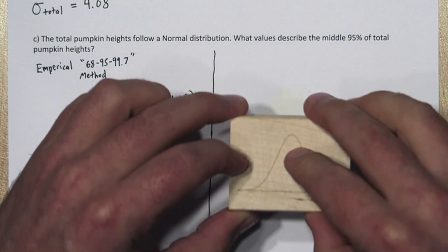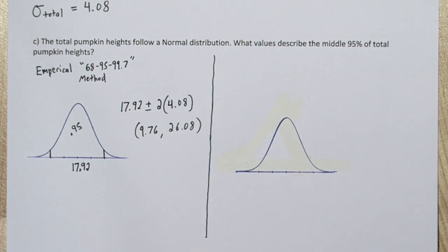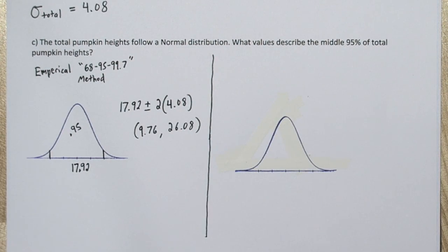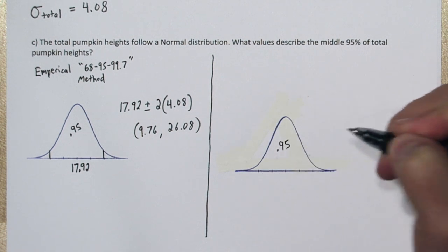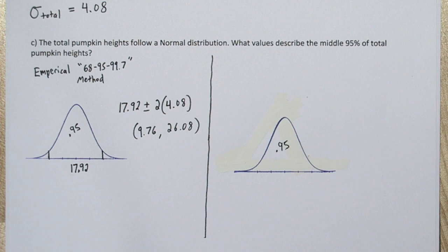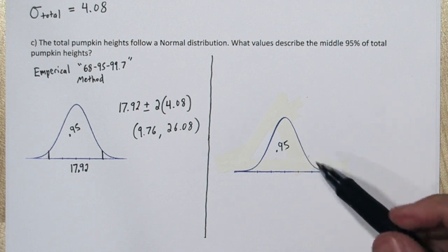Let's find the exact answer. So we'll draw another normal distribution. Now we want to find exactly how many standard deviations cut off the middle 95%.